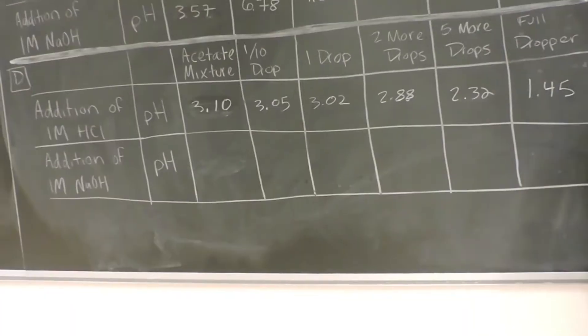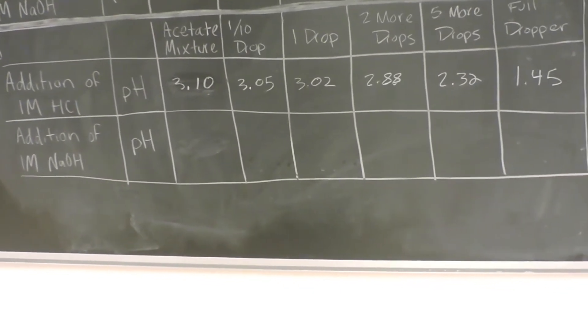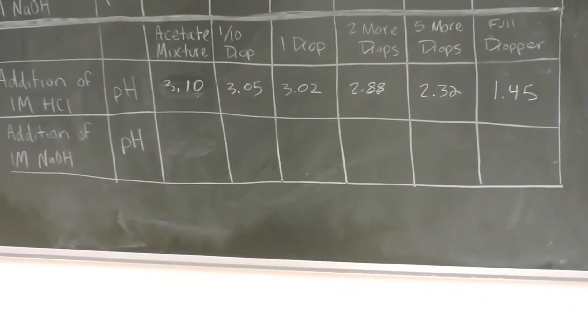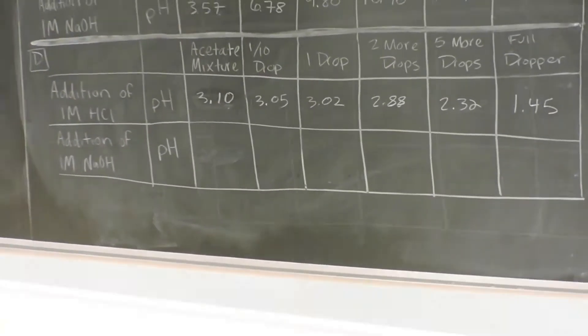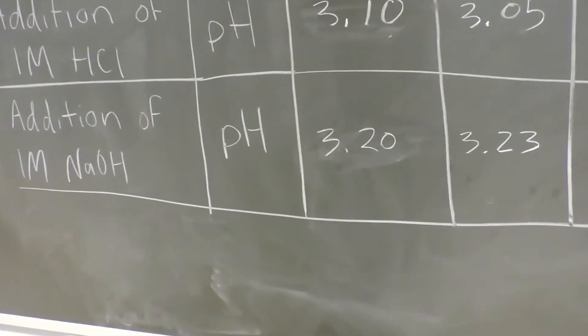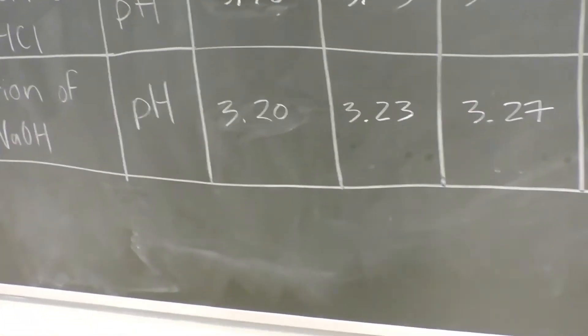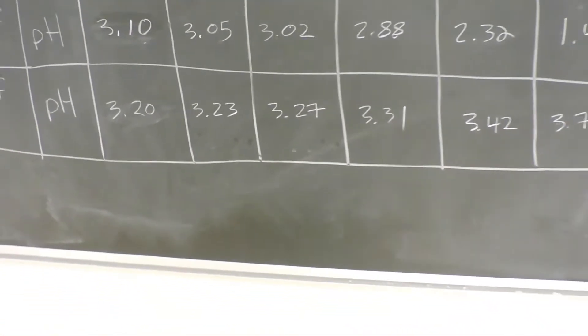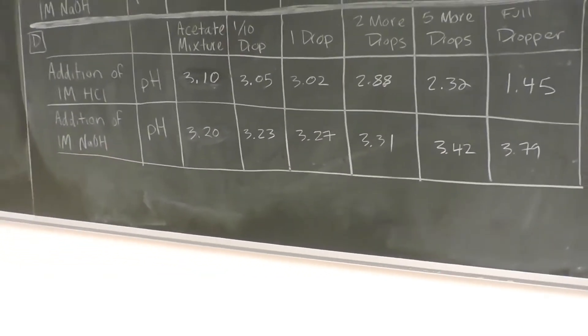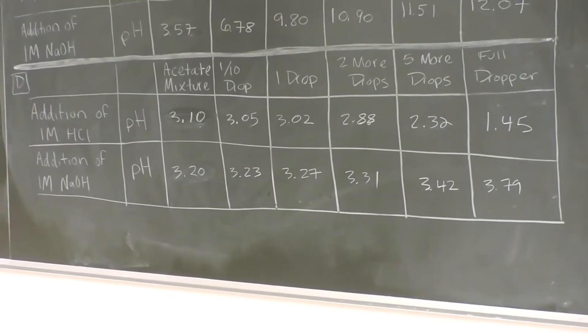We will repeat this with another mixture of acetate and we will add sodium hydroxide by the different drop amounts and report the pH. For the addition of the NaOH, we started with a pH of 3.2 for the acetate mixture and this was the trend as we added more drops of sodium hydroxide. This is the complete table for Part D for the acetate mixture.